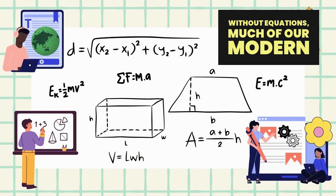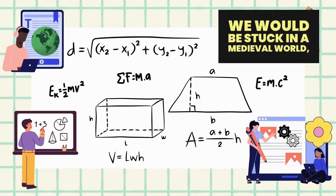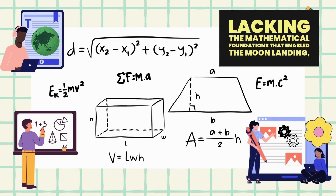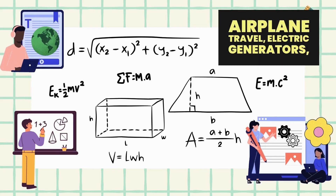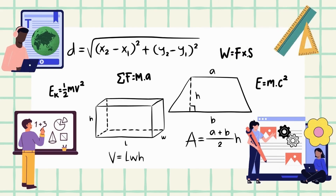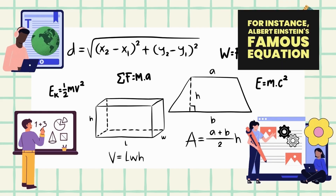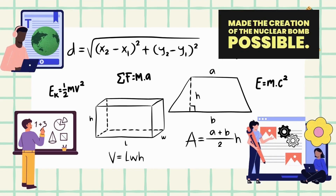Without equations, much of our modern technology would never have been invented. We would be stuck in a medieval world, lacking the mathematical foundations that enabled the moon landing, airplane travel, electric generators, and even our understanding of life itself and the events that shaped the modern world. For instance, Albert Einstein's famous equation E equals mc² made the creation of the nuclear bomb possible.